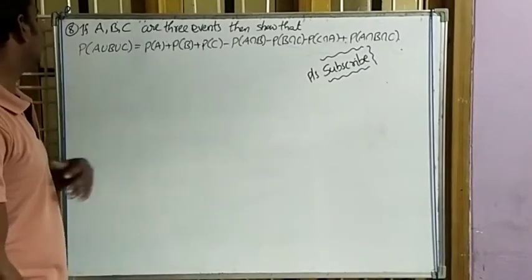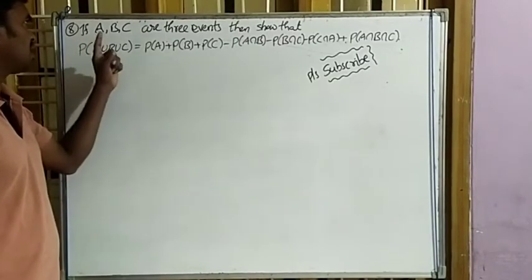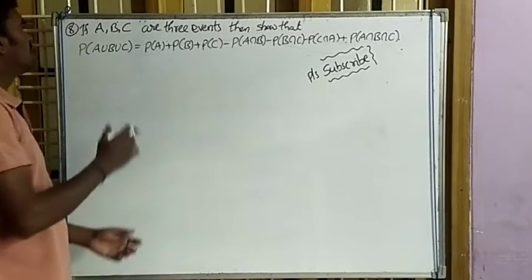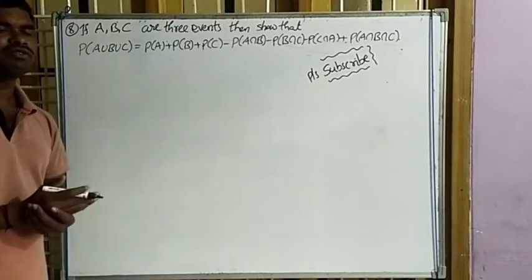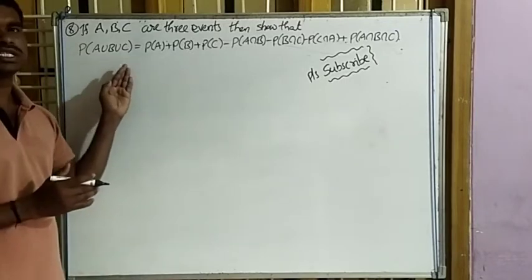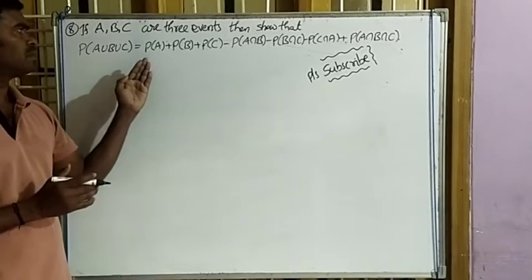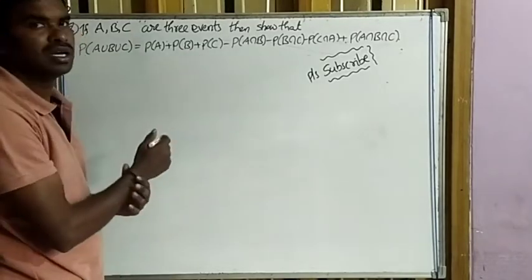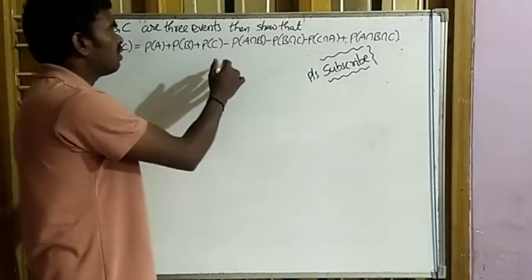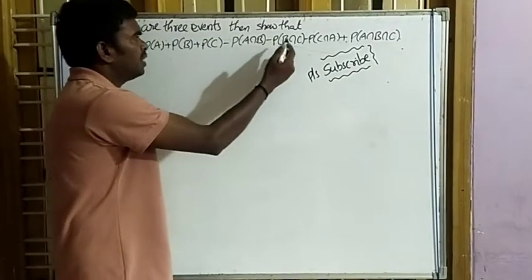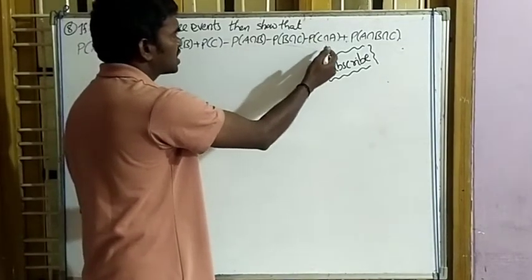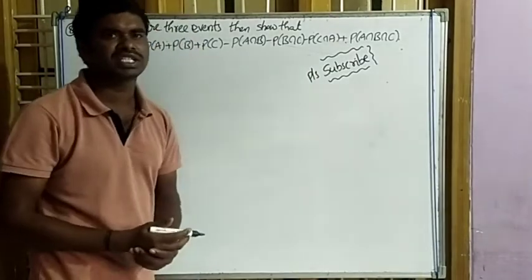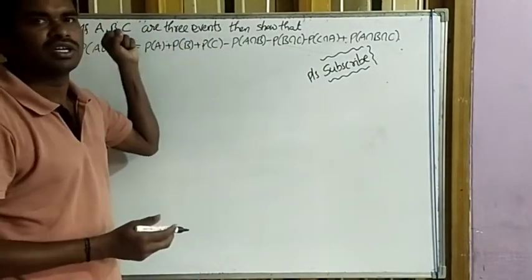Next, 8th question: If A, B, C are three events, then show that P(A∪B∪C) = P(A) + P(B) + P(C) − P(A∩B) − P(B∩C) − P(C∩A) + P(A∩B∩C).